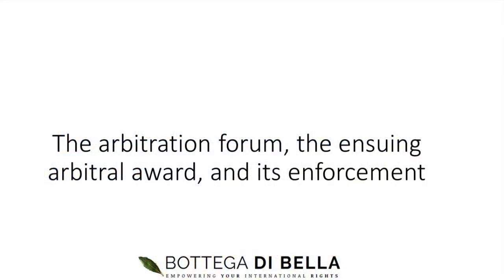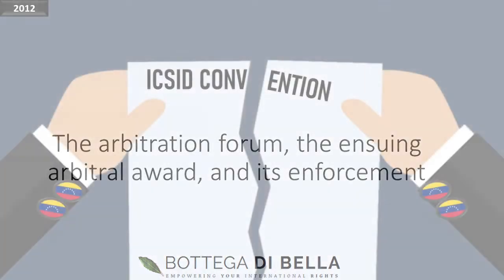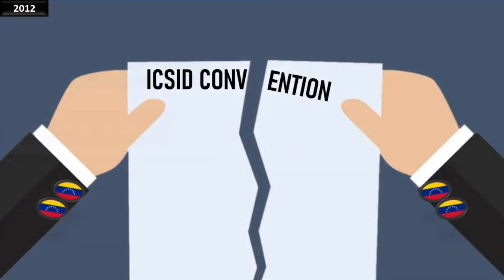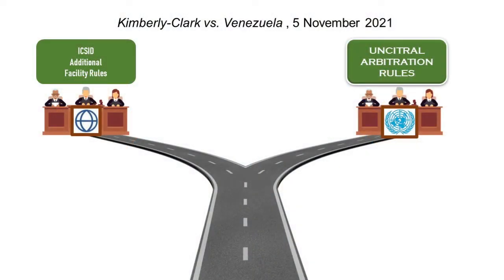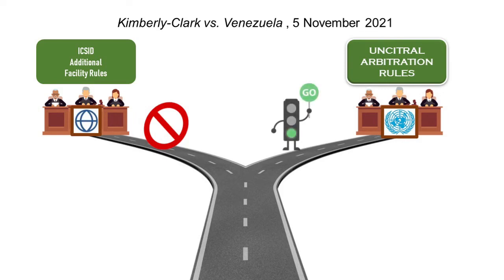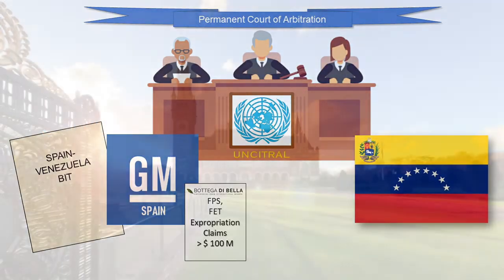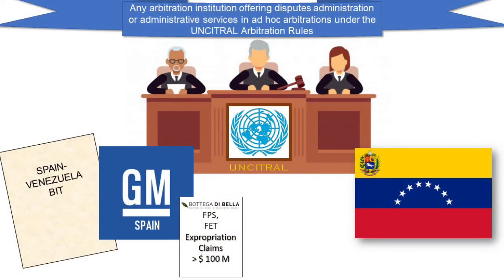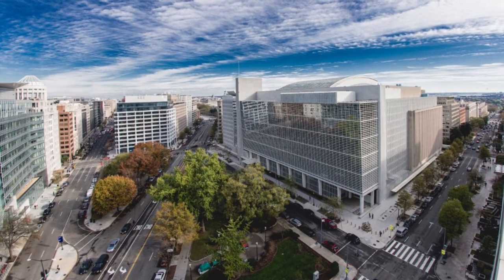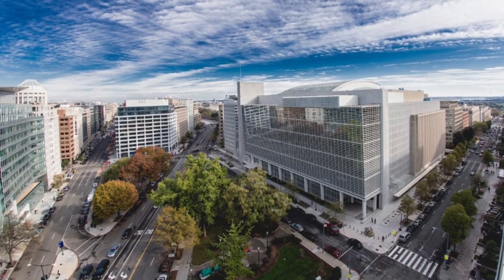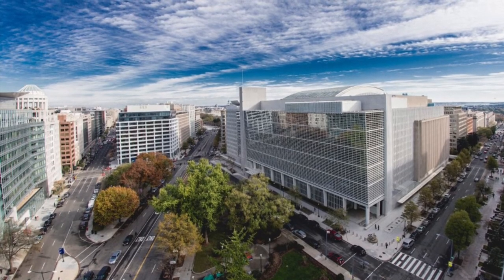In light of Venezuela's 2012 denunciation of the ICSID Convention, and the recent arbitral award in Kimberly-Clark v. Venezuela confirming that an arbitration under the ICSID facility rules is no longer an option for foreign investors who want to sue Venezuela, the only forum available to arbitrate an investment dispute against Venezuela under the Spain-Venezuela BIT is an arbitration pursuant to the UNCITRAL arbitration rules. Hence, GM Spain may initiate an UNCITRAL arbitration which may be administered by the Permanent Court of Arbitration in The Hague. An UNCITRAL arbitration could also be administered by other arbitration institutions, including the ICSID itself, which also offers to administer disputes under the UNCITRAL arbitration rules or to render administrative services in ad hoc arbitrations.